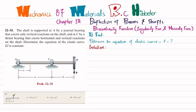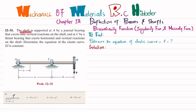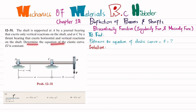Welcome back. Problem 12-31. This problem is taken from chapter 12, that is deflection of beams and shafts, from the book Mechanics of Materials by R.C. Hibbeler. The statement is: the shaft is supported at A by a journal bearing that exerts only a vertical reaction on the shaft, and at C by a thrust bearing that exerts horizontal and vertical reactions. Determine the equation of the elastic curve. EI is constant.